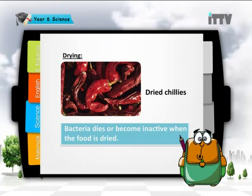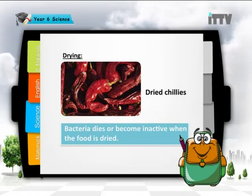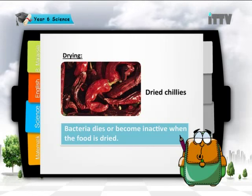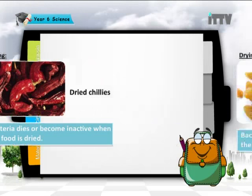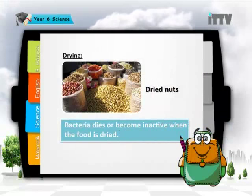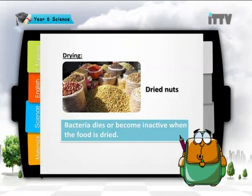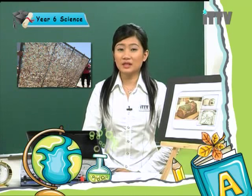Let's look at the first method of food preservation: drying. For example, dried chilies — bacteria dies or becomes inactive when the food is dried. Other examples include dried raisins, dried nuts, and many more. When drying food or putting it under the sun, this draws the water out, reducing the amount of water inside. Without water, microorganisms do not like to grow, which slows down their growth.